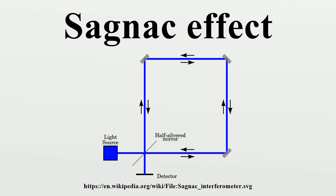The rotation thus measured is an absolute rotation — that is, the platform's rotation with respect to an inertial reference frame. Early suggestions to build a giant ring interferometer to measure the rotation of the Earth were made by Oliver Lodge in 1897, and then by Albert Abraham Michelson in 1904.